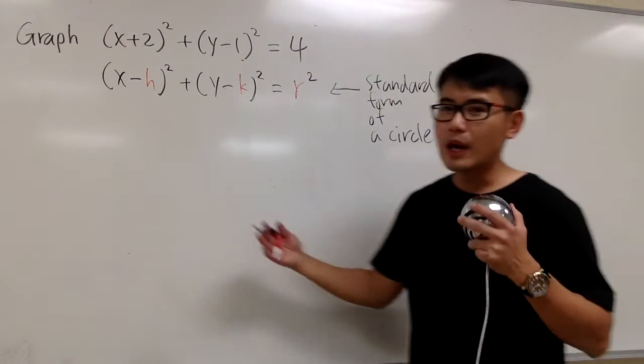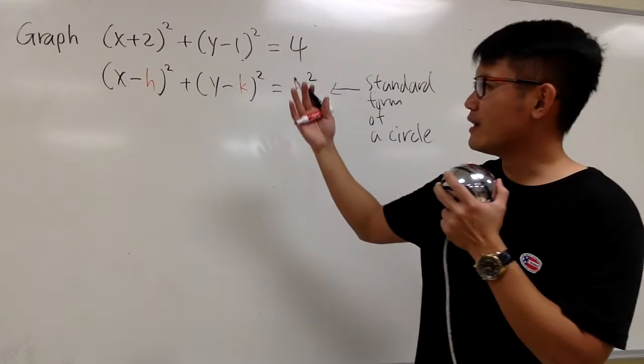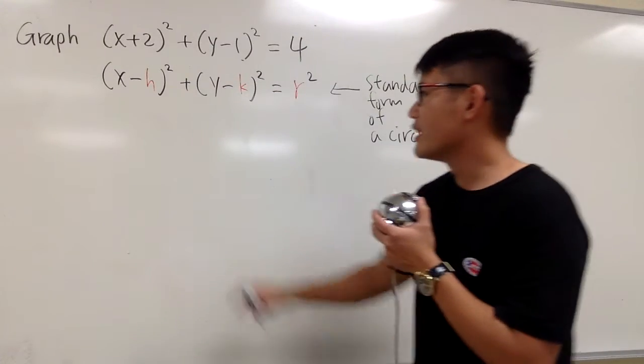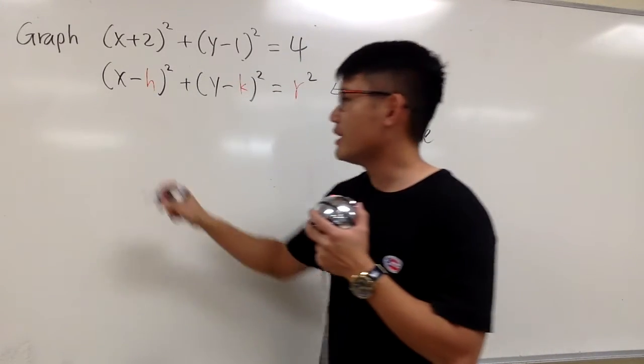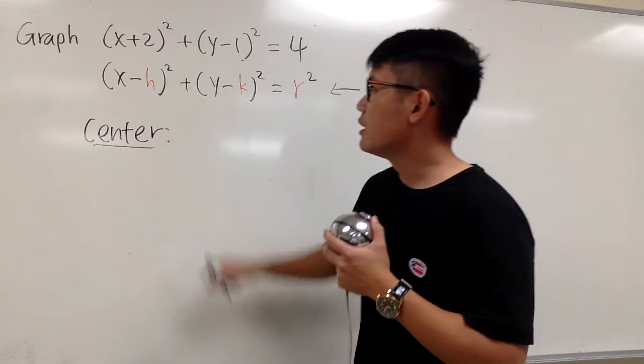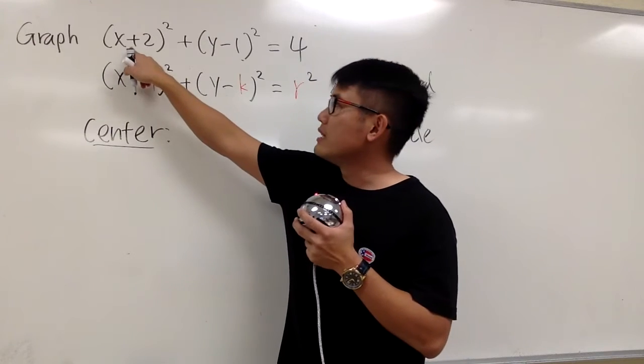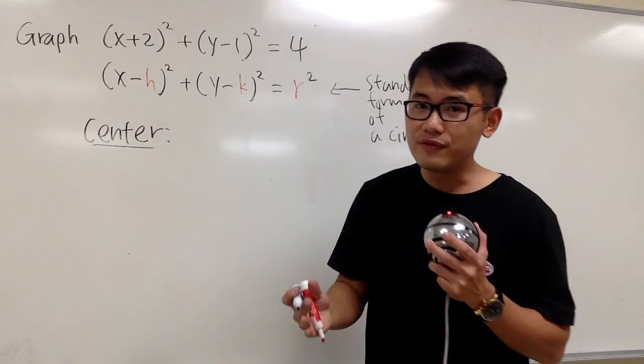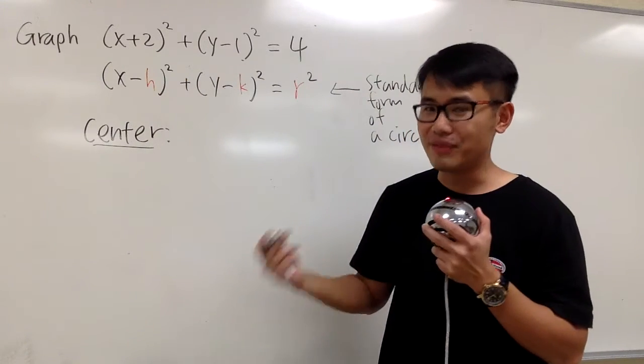So now, can we see the center first? h, k is the center, right? So let's see, the center is going to be, okay, we have h, but then even though right here I see plus 2, the h value is actually negative 2.